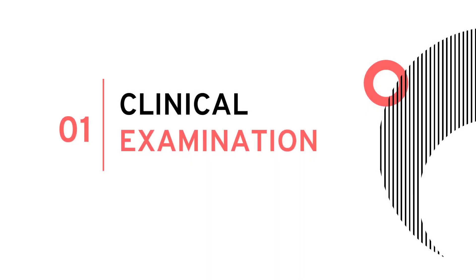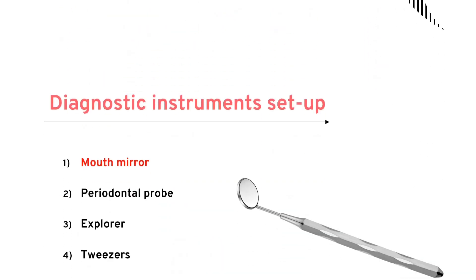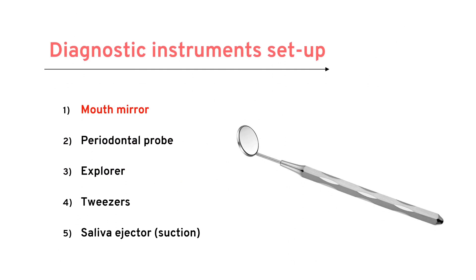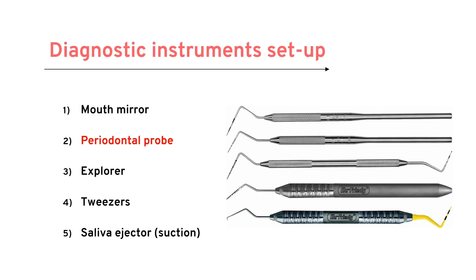Let's start with the first clinical appointment. In the first appointment, we take case history, examine, diagnose, and decide the treatment plan. During examination, we should have a set of instruments: the mouth mirror, used for indirect vision, retraction, and tissue protection; and the periodontal probe, whose function is to measure the depth of the gingival sulcus, check mobility, and measure overjet and overbite.